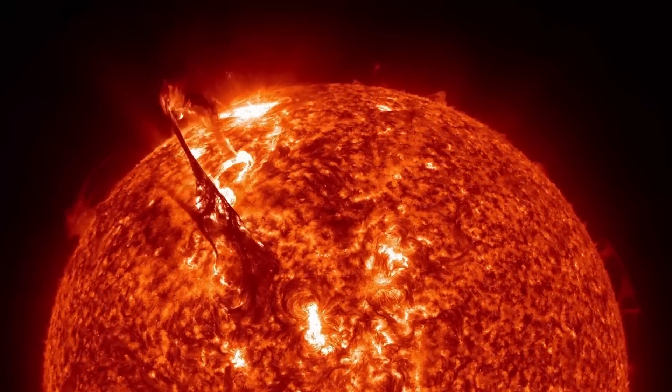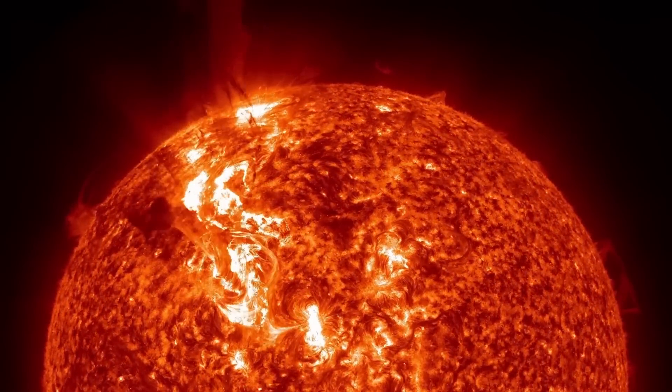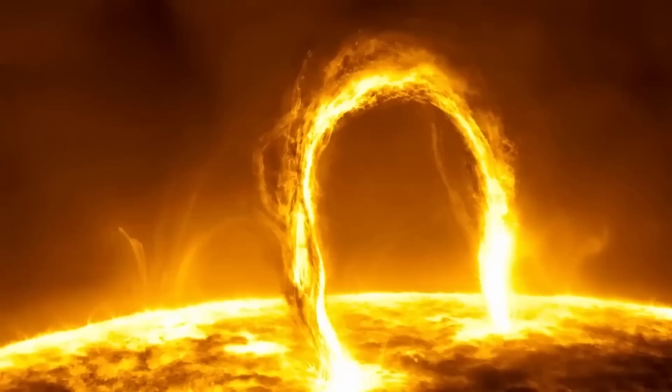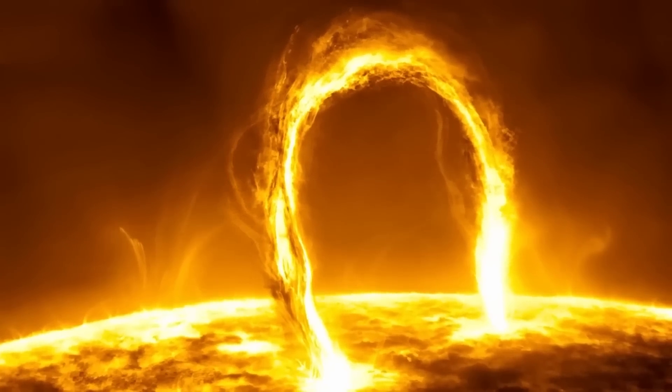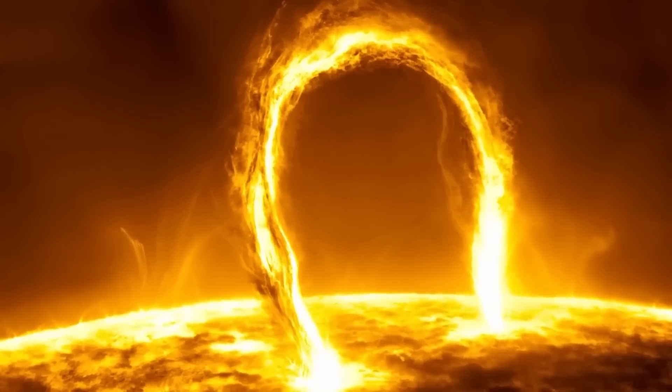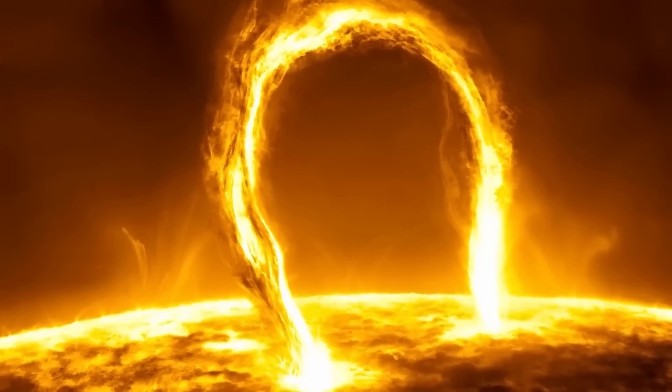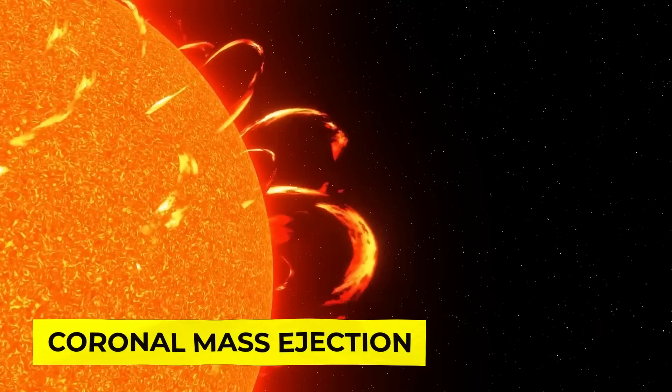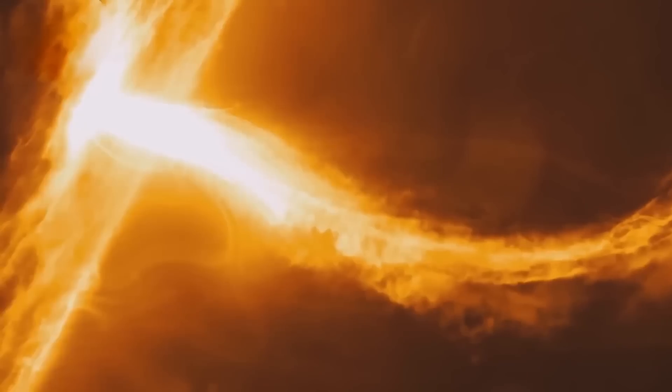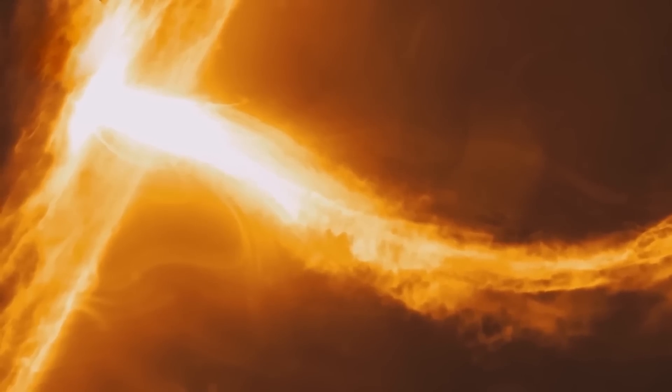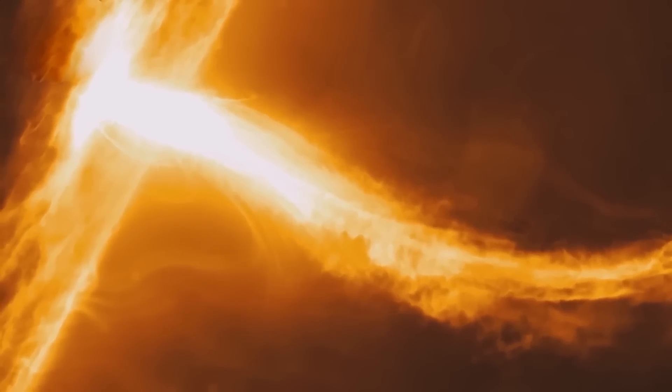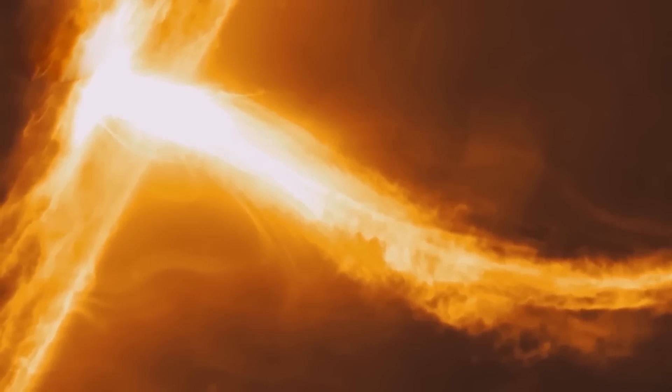Our solar system's Sun regularly ejects mass into space, which is known as solar flares. However, the Sun only exhales tiny fragments of its outer atmosphere, known as the corona, giving the phenomenon the name coronal mass ejection. As a result, coronal mass ejections and surface mass ejections can occur at separate times.